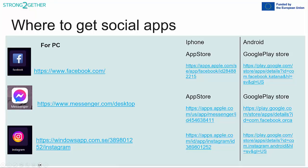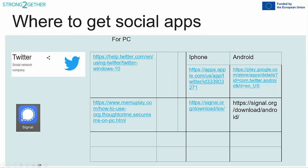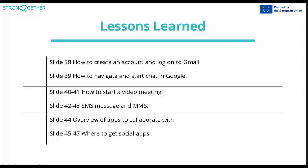Slides 45 to 47 indicate where you can download the apps and programs to install on your computer or tablet, along with instructions on how to use them. Summary of what we have learned: Slide 38 — how to create an account and log into Gmail. Slide 39 — how to navigate and start a chat in Google. Slides 40 to 41 — how to start a video meeting. Slides 42 to 43 — how to send SMS and MMS. Slide 44 — overview of apps to collaborate with. Slides 45 to 47 — where to find apps for social media.